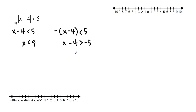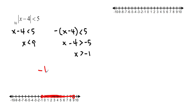When graphing this on the number line, we circle 9 with an open circle since we don't have equals, and circle negative 1 with an open circle as well. We're less than 9 going in one direction, and greater than negative 1 going in the other — they meet in the middle. Our solution is negative 1 less than x less than 9.